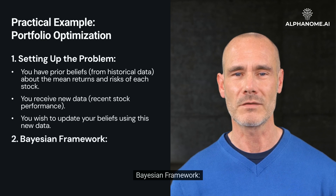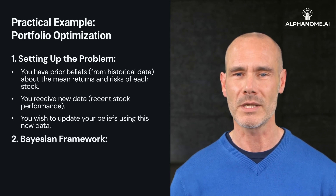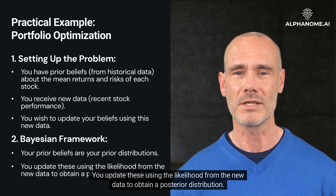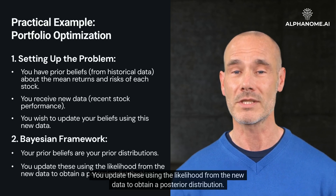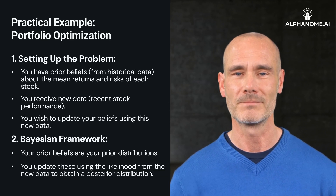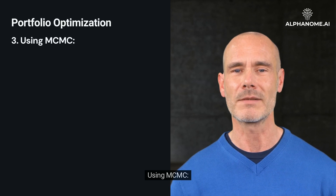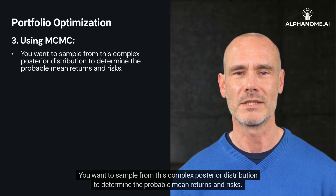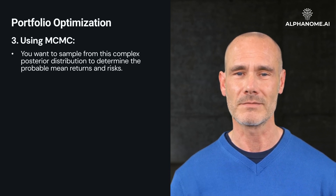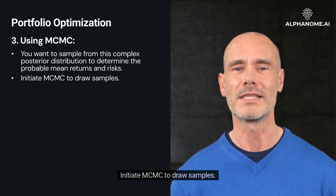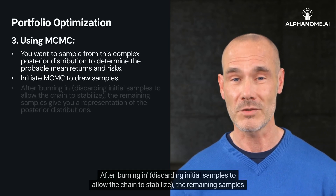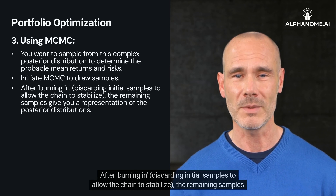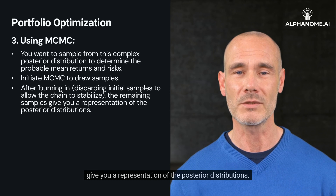Bayesian framework: your prior beliefs are your prior distributions. You update these using the likelihood from the new data to obtain a posterior distribution. Using MCMC: you want to sample from this complex posterior distribution to determine the probable mean returns and risks. Initiate MCMC to draw samples. After burning in — discarding initial samples to allow the chain to stabilize — the remaining samples give you a representation of the posterior distributions.